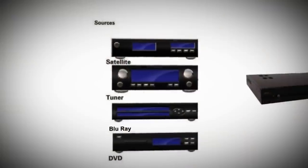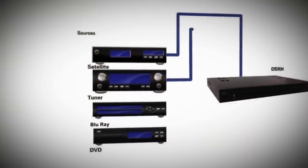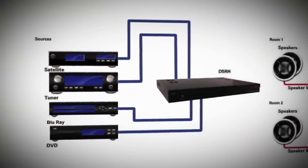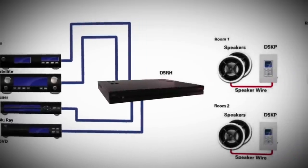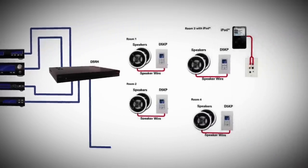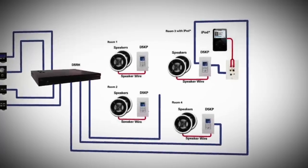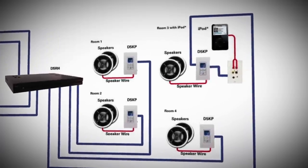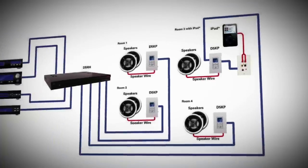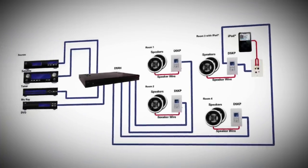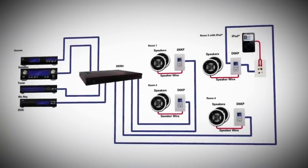After you decide on the best location for the hub and the source components, just run one Cat5 cable from the keypad location in each room back to the hub. If you're using the optional local source wall plate, run Cat5 from that to the keypad in the room also. Then run speaker wire from each keypad location to the speakers in that room.